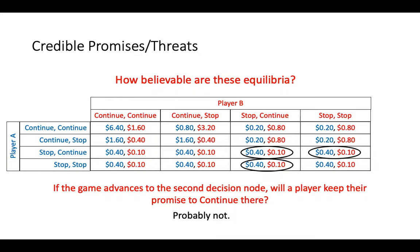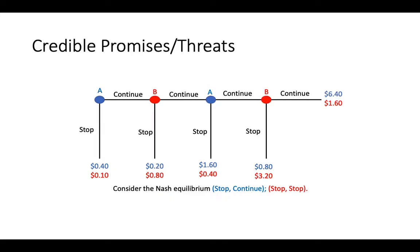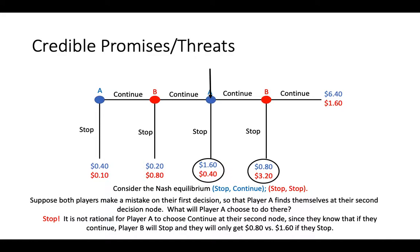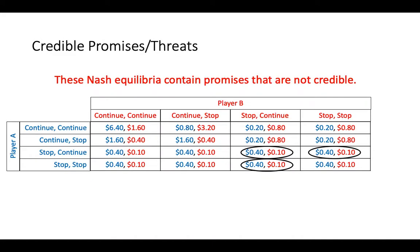To see why, let's look at the extensive form of this game. Consider the Nash equilibrium in which Player A chooses the strategy stop-continue and Player B chooses the strategy stop-stop. Suppose that both players made a mistake on their first move, so that Player A finds themselves at the second decision node. Their strategy says that they should play continue, but is that really the best decision for Player A? The answer is no — Player A would be better off by stopping, since if they continue, they know that Player B will stop and Player A will only get $0.80 versus $1.60 if they stop right away. We can make the same argument about the other two Nash Equilibria that involve at least one player continuing at their second decision node.